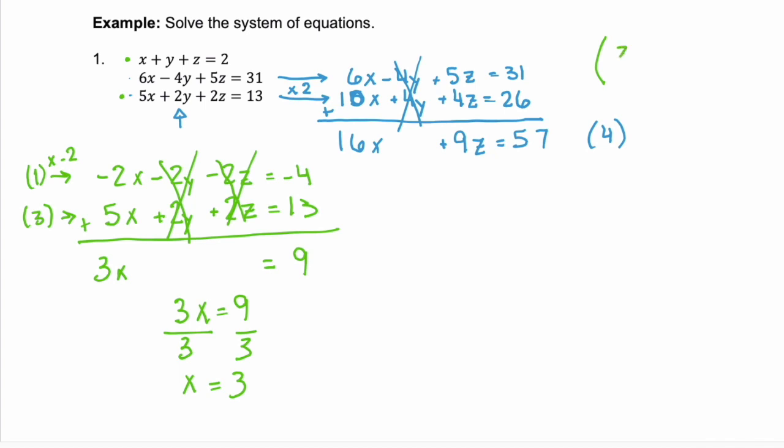Let's write that at the top. Our x coordinate is 3. Now we need to find our y and our z. We know our x coordinate. If you look at equation four here, the one that we created first, if we substitute in the x value we have, we can solve for z. So we're going to take 16x + 9z = 57. We know that x is 3. So we solve 16 times 3 + 9z = 57.